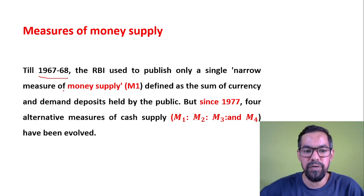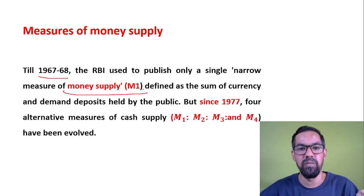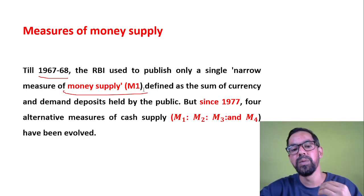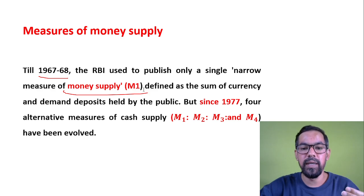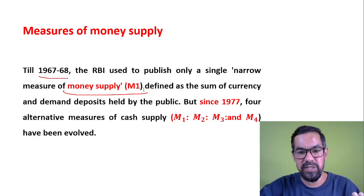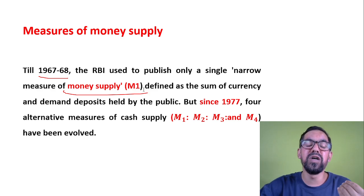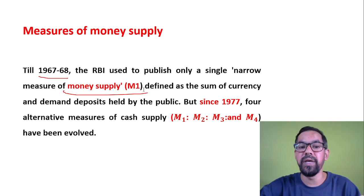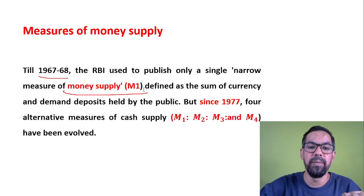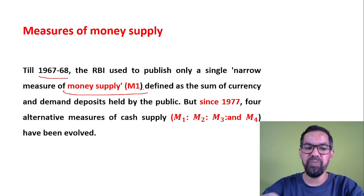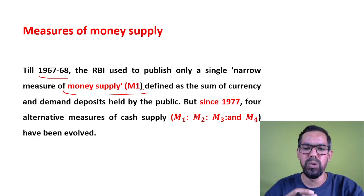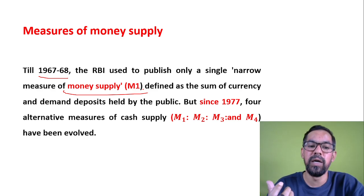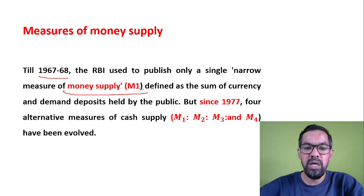Whenever you talk about M1, it generally includes currency with the public, demand deposits with the banking system, and other deposits with RBI. So till around 1966–68, the RBI used the M1 concept for money measurement.